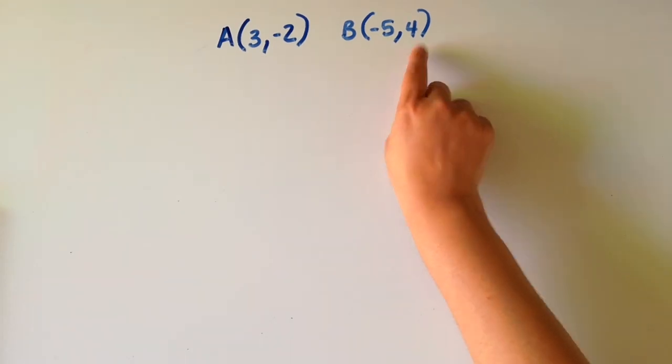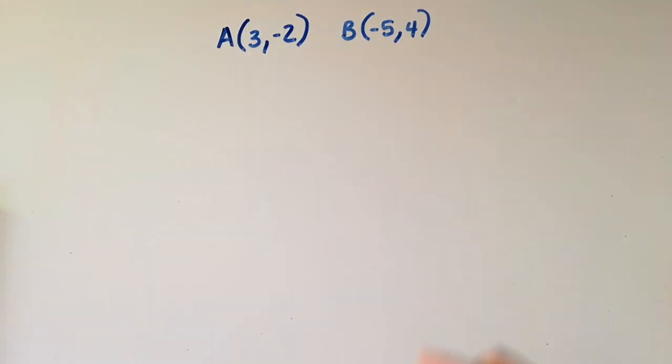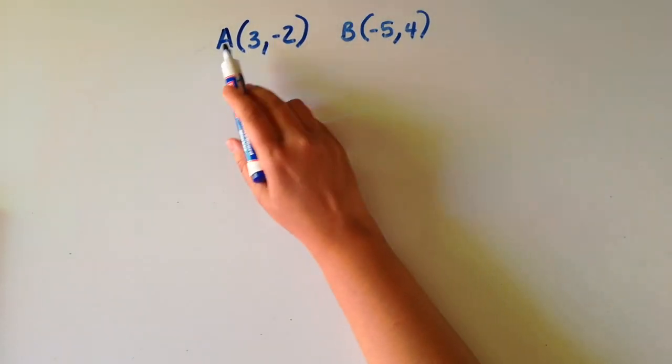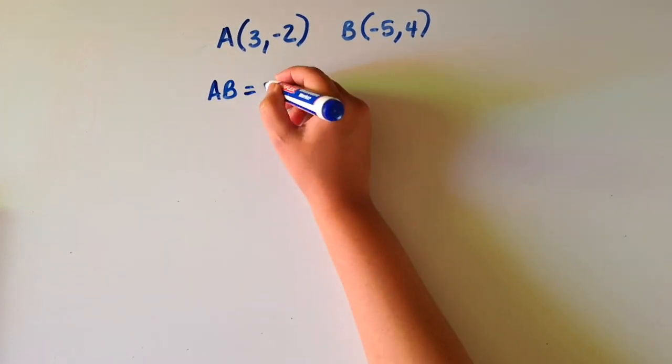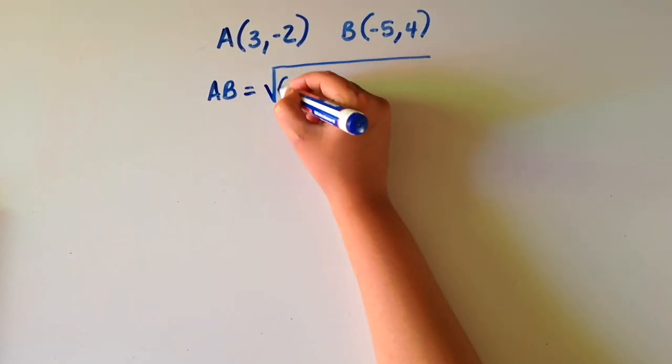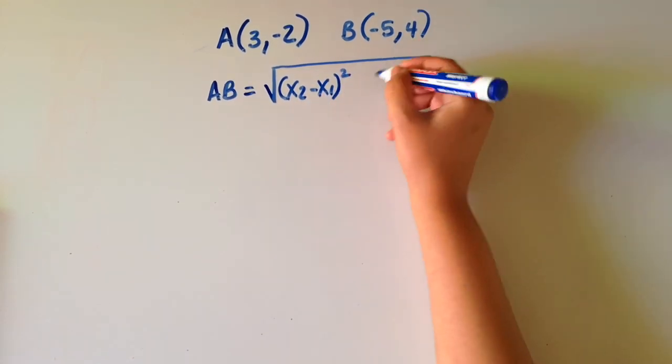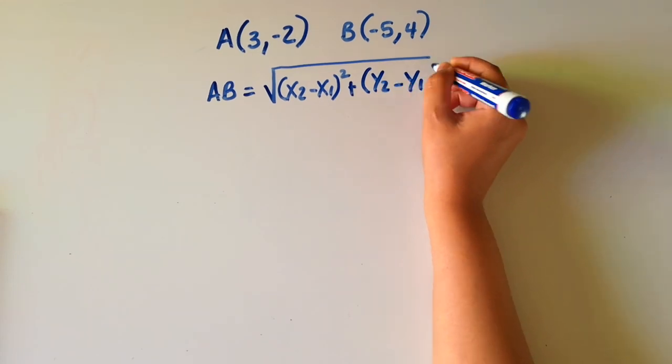Now let's say I wanted to calculate the distance between these two points, A and B. That's where our distance formula comes in. So the distance between these two points, AB, is equal to the square root of (x2 minus x1) squared plus (y2 minus y1) squared.